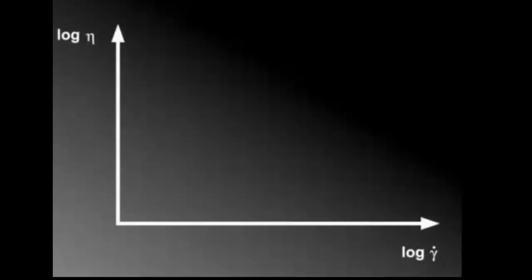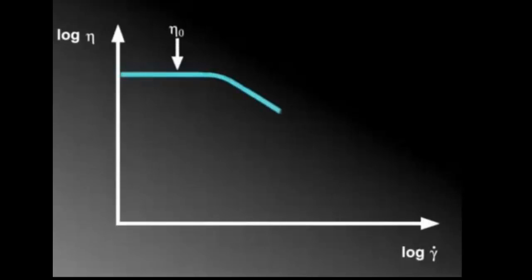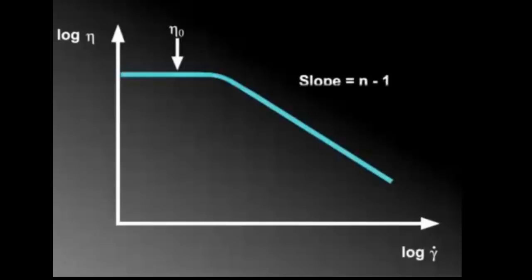Let's look at the Carreau model on a log-log plot. At low shear rates, the viscosity is constant and equal to eta-naught. At higher shear rates, the viscosity begins to shear-thin and is described by a line with negative slope. The slope of this line is also equal to n-1.